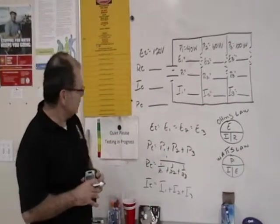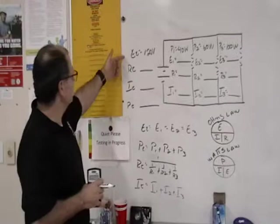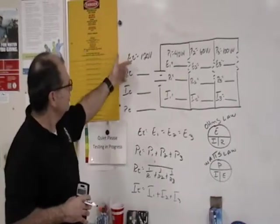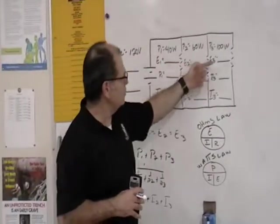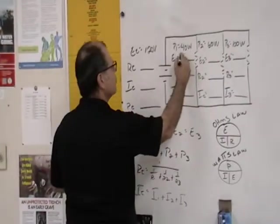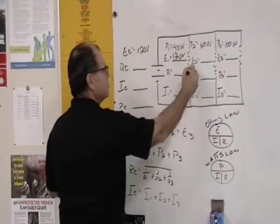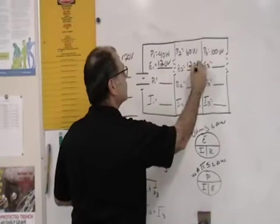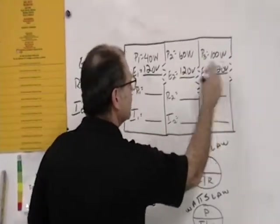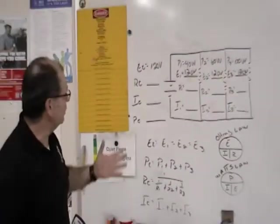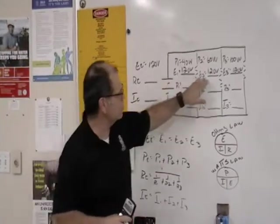The first thing I would do, since I have 120 volts, I know what my voltage is across each one of these. It's going to be 120 volts because in a parallel circuit, voltage stays the same across all the components. So that would be the first thing I solve for.